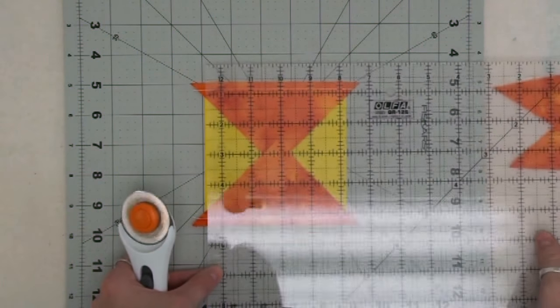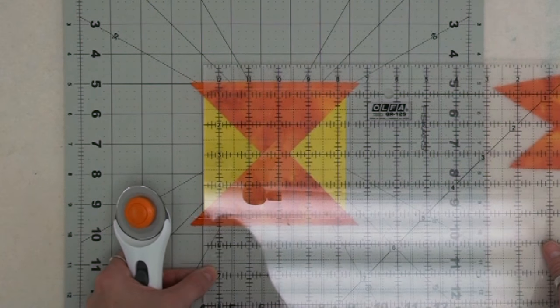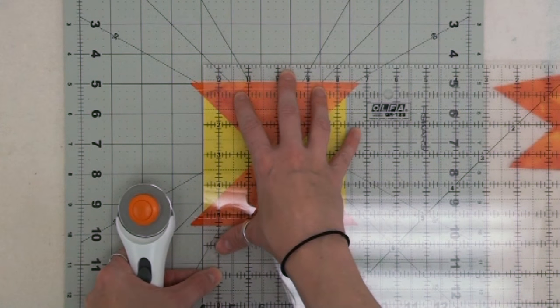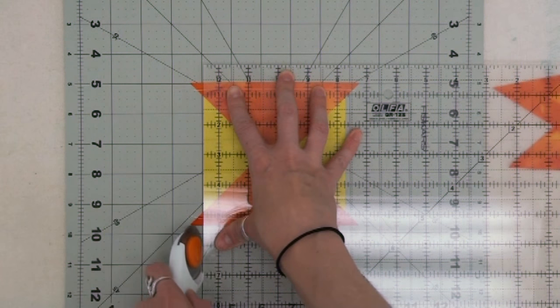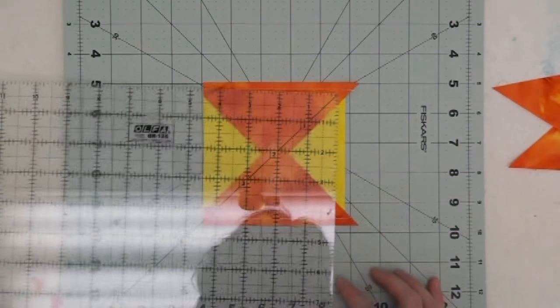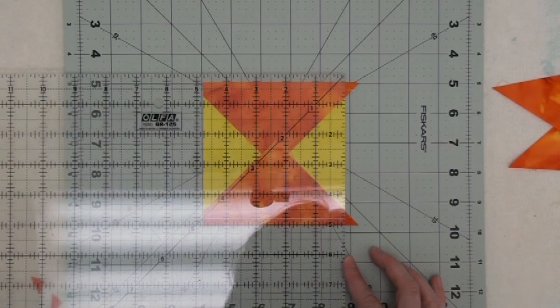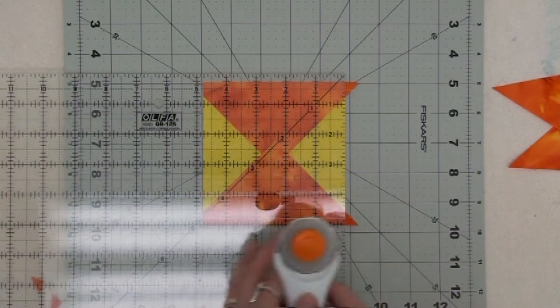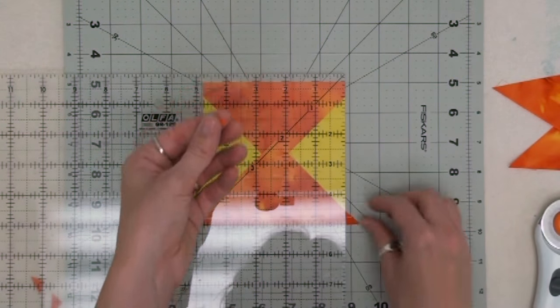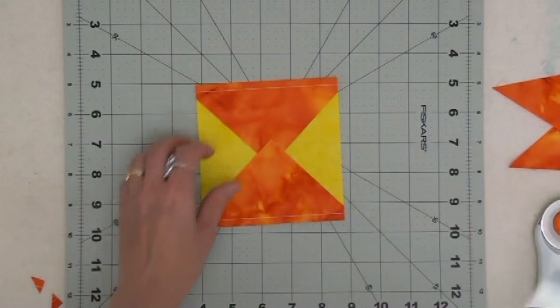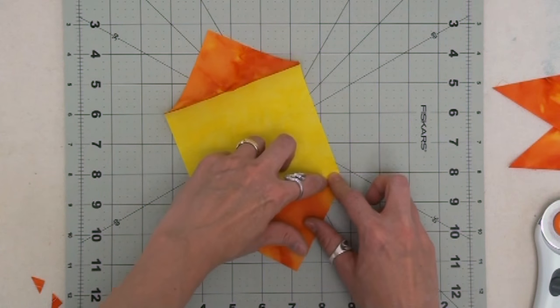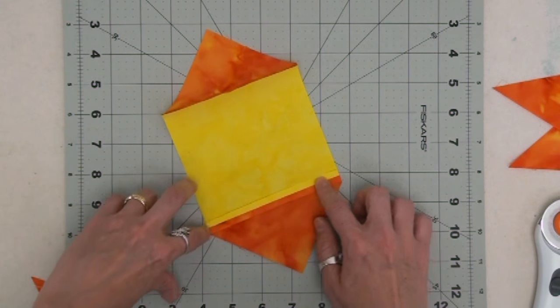Even before I press those triangles open and those seams open, I'm going to go on ahead and trim up these little triangles on the edges. I'm just lining up my ruler really carefully and I'll lop off those little triangles. Be careful not to cut the fabric C square. Just cut off the extra fabric, that fabric B, those little schniblets. Then of course take those pieces, finger press them open nicely, and then press with a hot dry iron.